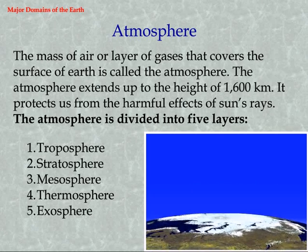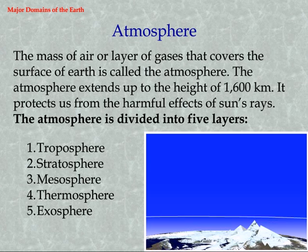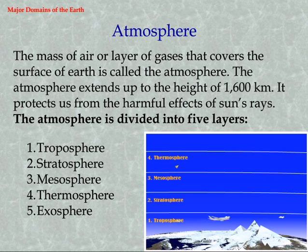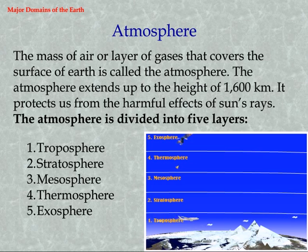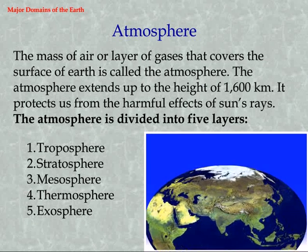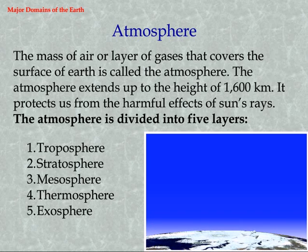Atmosphere. The mass of air or layer of gases that covers the surface of Earth is called the atmosphere. The atmosphere extends up to a height of 1600 km. It protects us from the harmful effects of the sun's rays.